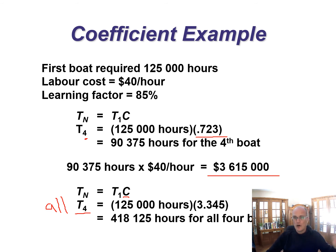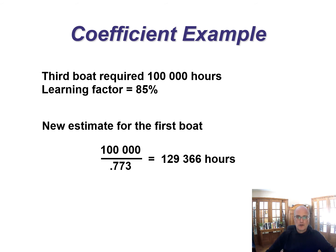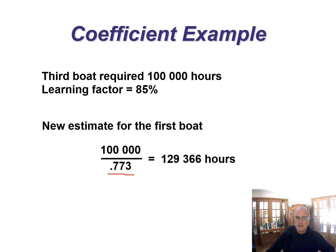You should be able to use all three approaches and figure out which one works best in your circumstance. The coefficient approach also allows you to work backwards. If a third boat required 100,000 hours and the learning factor is 85%, you can reverse engineer to find T1. Using the unit coefficient of 0.773 for the third unit at 85%, T1 is approximately 129,366 hours. I'll show you examples of that sort of reverse engineering in the video with worked examples.